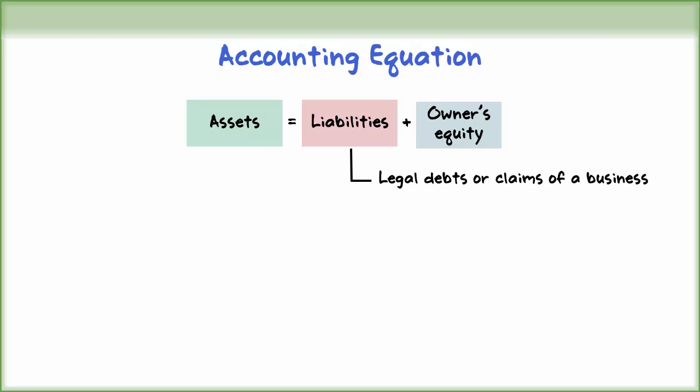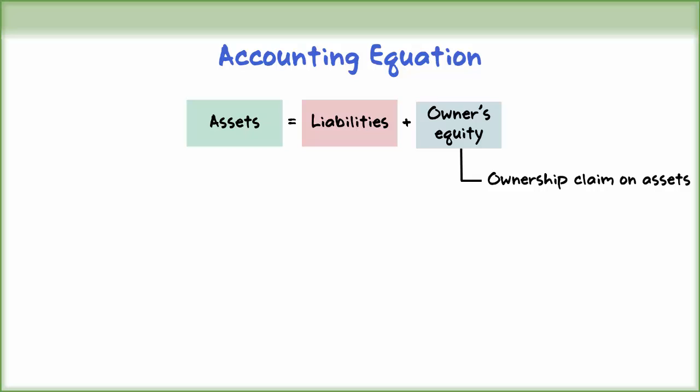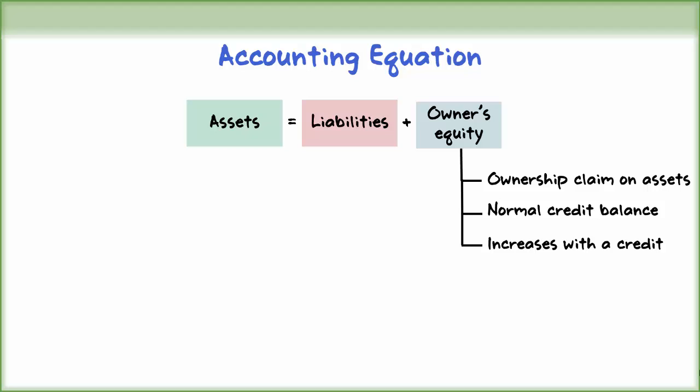Liabilities are the legal debts or claims of a business against its assets. They have a normal credit balance, increase with a credit, and decrease with a debit. Owner's equity is the ownership claim on the total assets of a business. It is equal to total assets minus total liabilities. It has a normal credit balance, increases with a credit, and decreases with a debit.